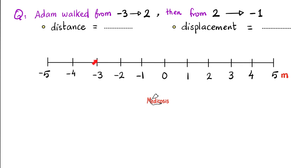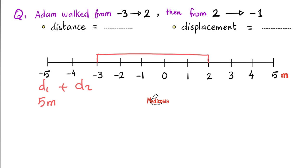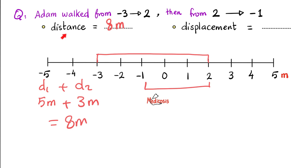Let's try this one. Adam walked from negative 3 to 2, then from 2 to negative 1. What's the distance and what's the displacement? For distance, forget about direction — just the magnitude. From negative 3 to 2 is 5 meters; that's D1. From 2 to negative 1 is 3 meters; that's D2. So 5 plus 3 equals 8 meters — that's the answer for distance. Distance is scalar, so it does not care about direction, only magnitude.